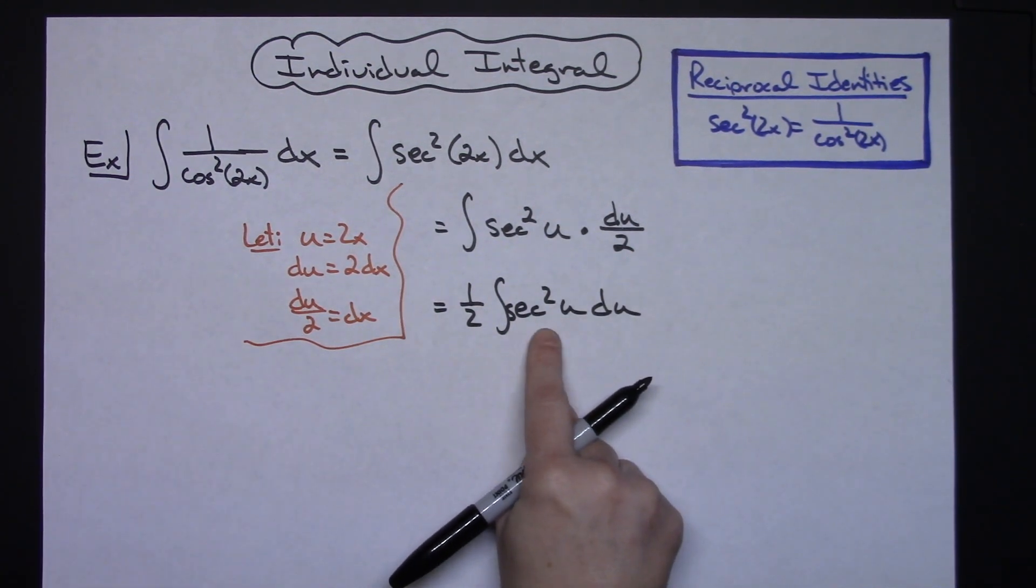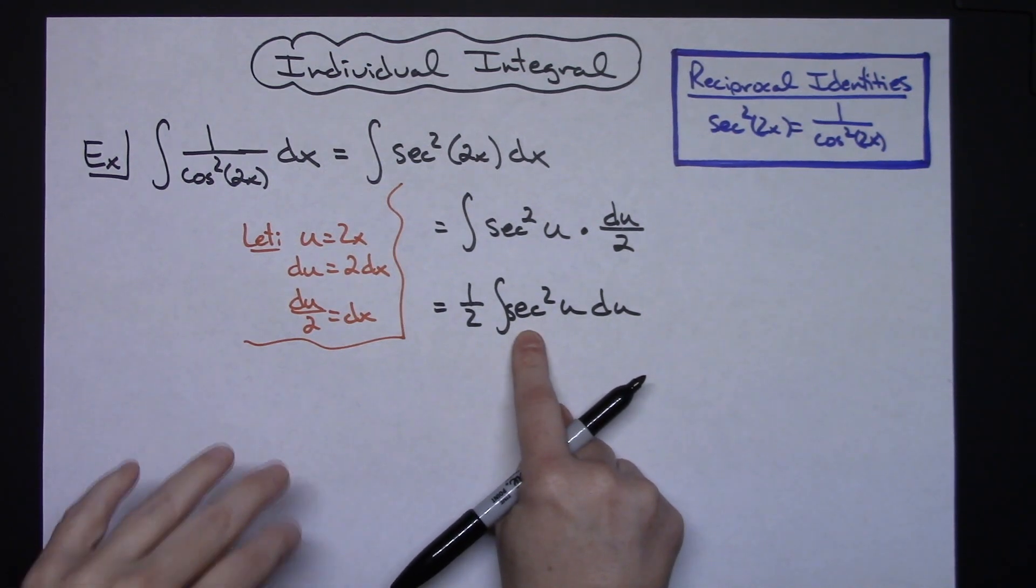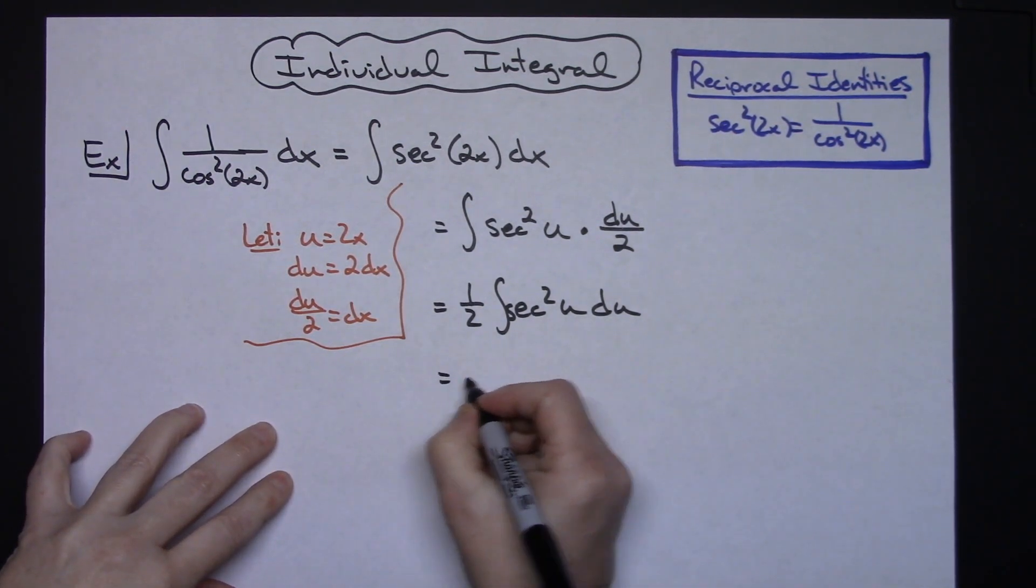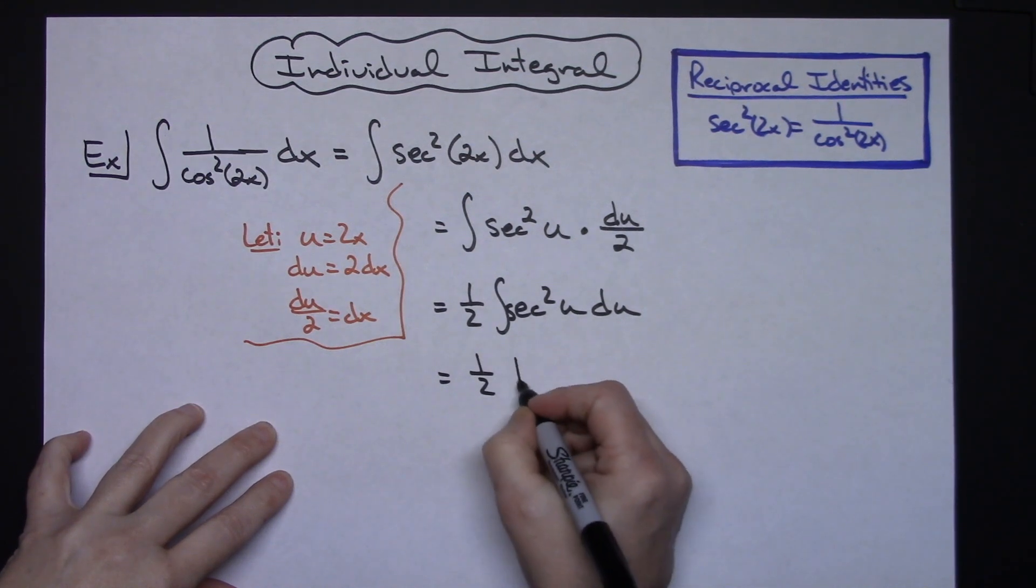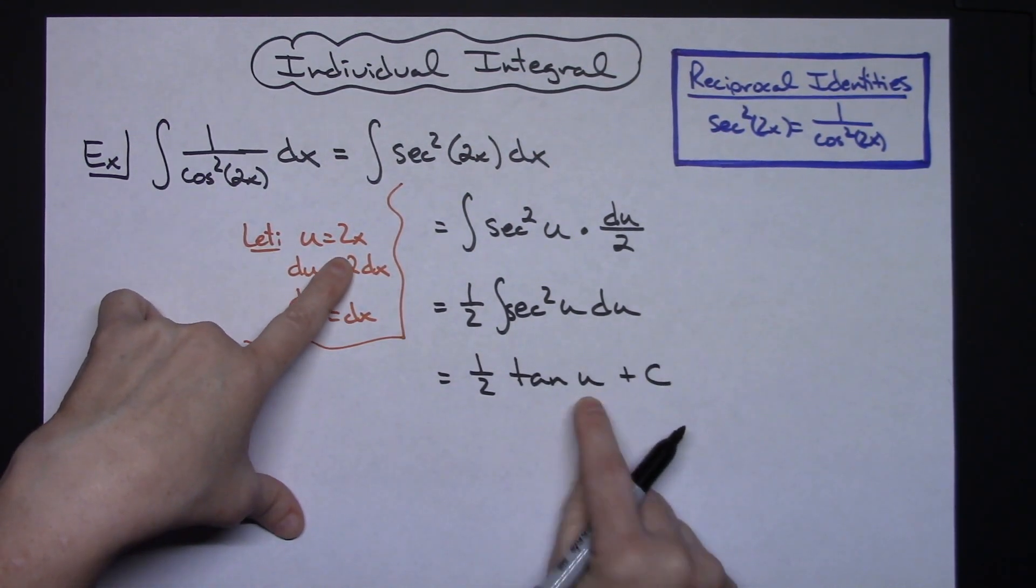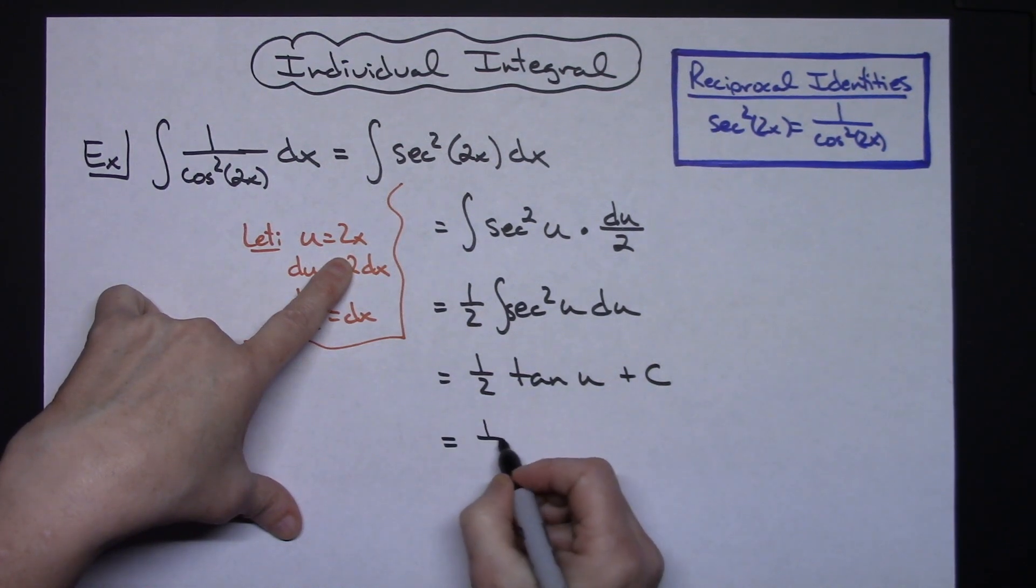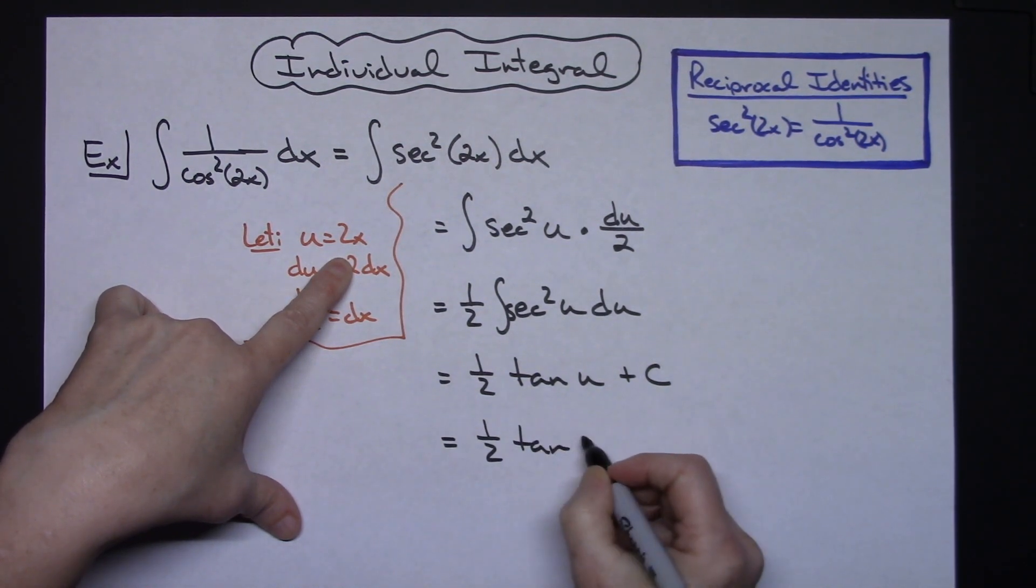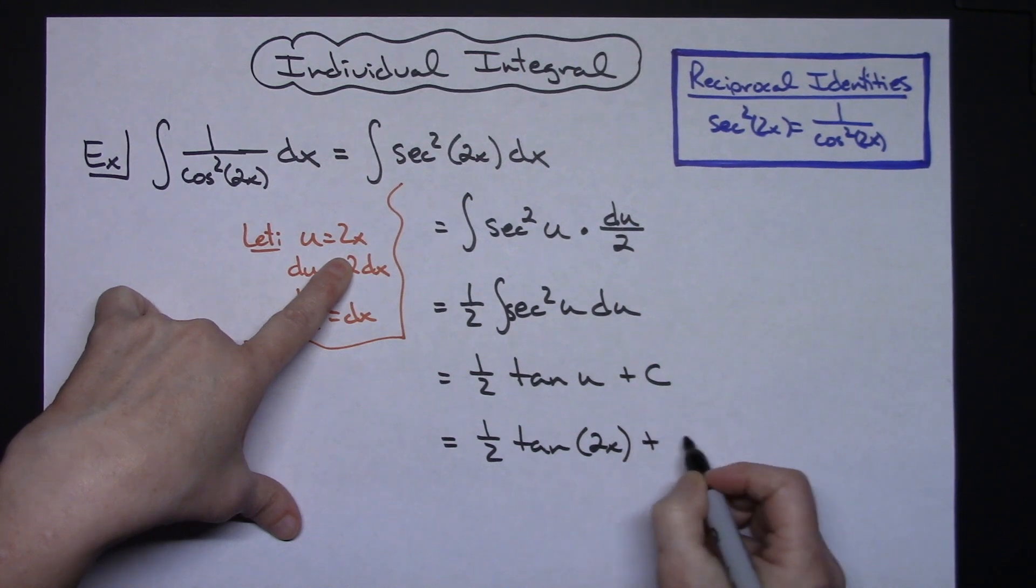And then we know that the derivative of tangent is secant squared, so then the integral of secant squared is going to be tangent. So I can do 1 half tangent u plus c, and I can replace u with what it equals for 1 half tangent of 2x plus c.